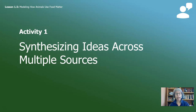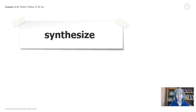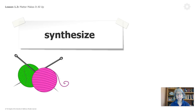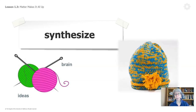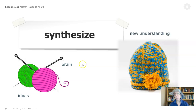Scientists do this very often. We looked at the word synthesizing and did some synthesizing back in lesson three. To synthesize — I want to create a metaphor. If you think of your ideas as different spools of yarn and the knitting needles as your brain, as you learn from different sources these different ideas come together — your brain actually knits them together, like this hat. The yarn comes together in the knitting process to make one thing, and you are making some new understanding. That's what we mean by synthesizing.